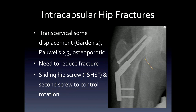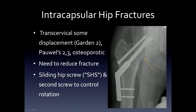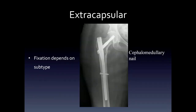Transcervical fractures that are displaced can be fixed by a sliding hip screw. This screw is made to slide into the barrel of the plate as fracture healing and bone resorption occur — that's supposed to stop the head of the screw from transgressing into the joint space. Often, a parallel derotational screw is placed before the hip screw to control rotation. Extra-capsular fractures can be fixed with cephalomedullary nails, with an interlocking screw distally and a compression screw proximally.